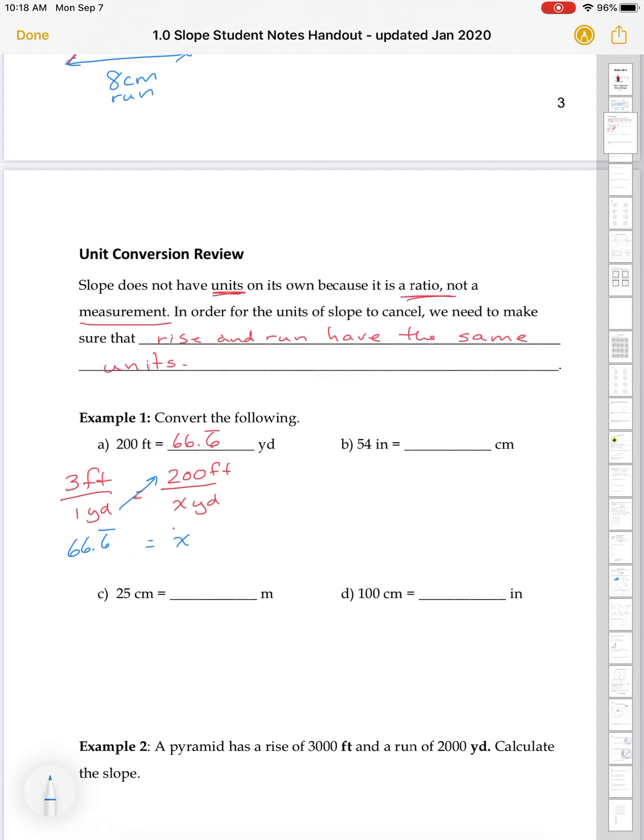54 inches and is how many centimeters? So, inches to centimeters. One inch equals 2.54 centimeters. So, this one's easier because all I have to do is multiply this by 2.54. Because each inch is going to be 2.5 centimeters. So, 54 times 2.54 will give me 137.16 centimeters.